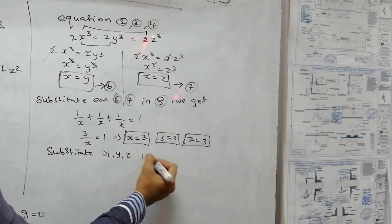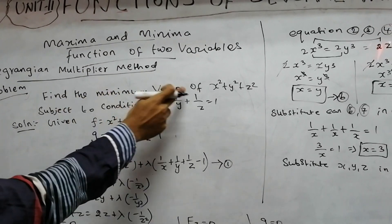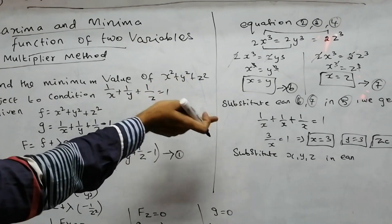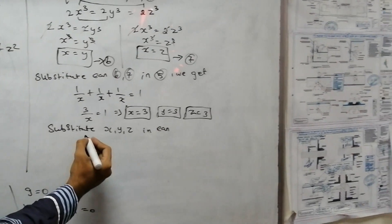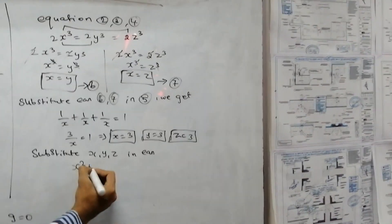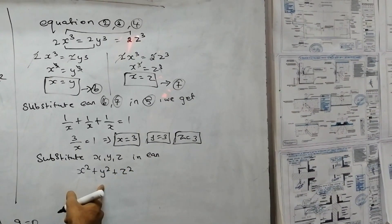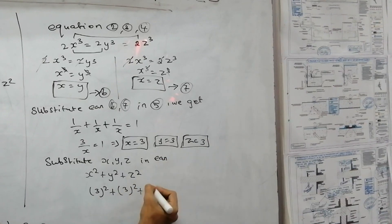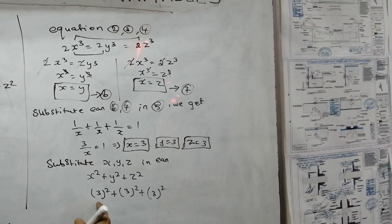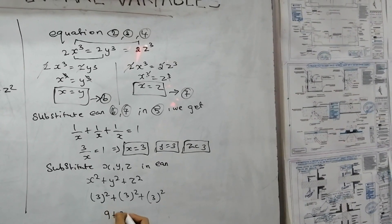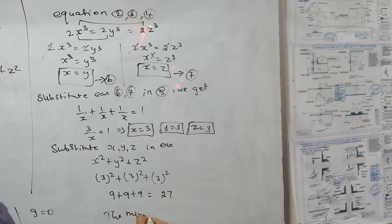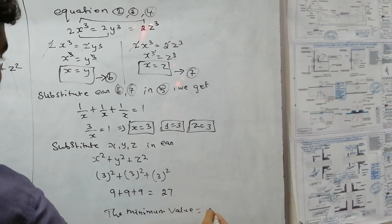Substituting x = 3, y = 3, z = 3 into the function x² + y² + z²: we get 3² + 3² + 3² = 9 + 9 + 9 = 27. Therefore the minimum value is 27.